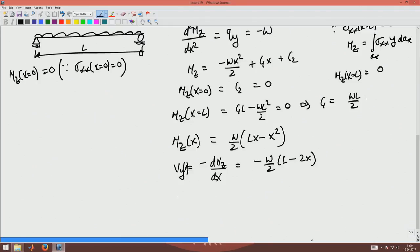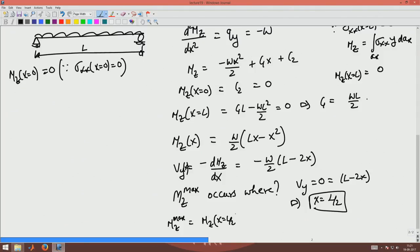Now I am interested in finding where bending moment mz max occurs. To maximize the function I have to set the derivative to zero. The maximum or minimum of a function will occur where the derivative of the function goes to zero. Hence v y equal to zero is L minus 2 x and that will be x is L by 2. So maximum Mz max will occur where Mz is at x equal to L by 2 and that will be W L square by 8.